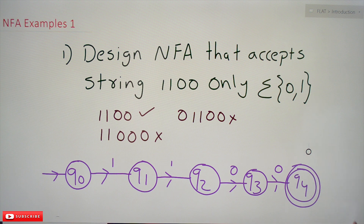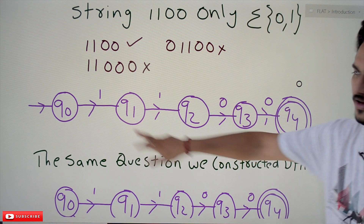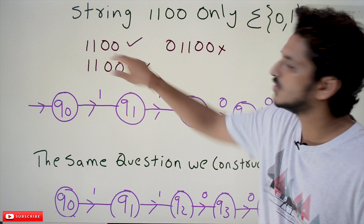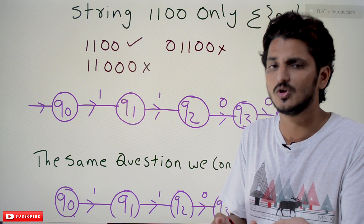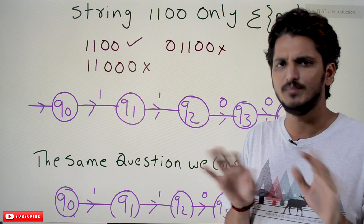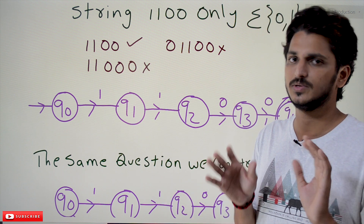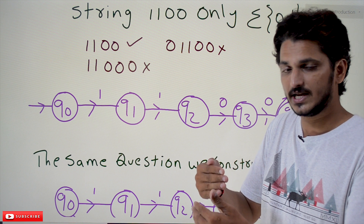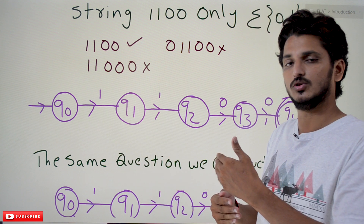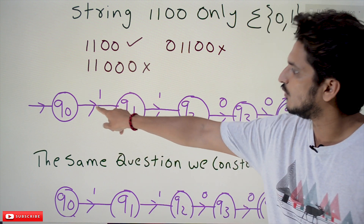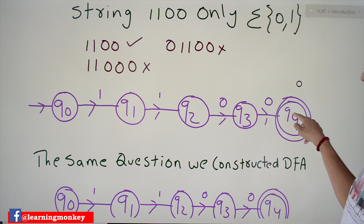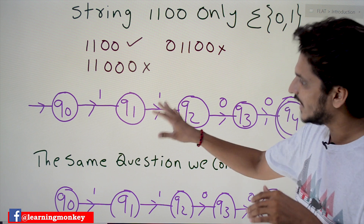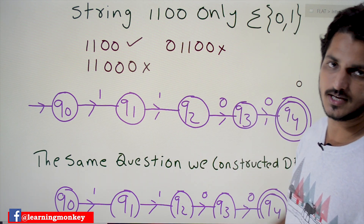Coming to the construction, this is our NFA. From the beginning of our classes we discussed that the base logic — we use this term for understanding purposes, though normally we don't have a base logic term in NFA or DFA. Double one double zero means four consecutive characters: one, one, zero, zero. When we identify those four characters we reach the final state. Whenever we find one one zero zero, we come to the final state. That is the base logic.